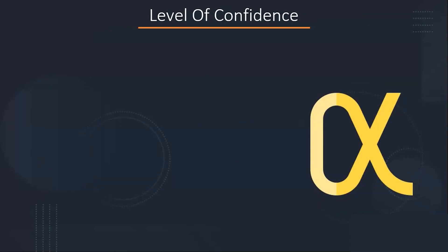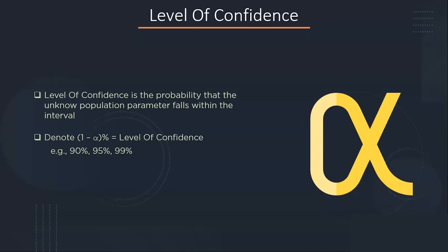Now what is level of confidence? With respect to estimation problems, alpha refers to a likelihood that a true population parameter lies outside the confidence interval. The level of confidence is denoted by 1 minus alpha and it is usually 90 percent, 95 percent or 99 percent.